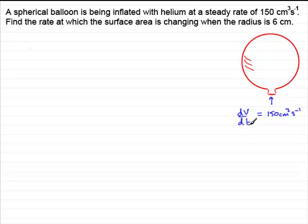Now, what have we got to find? We've got to find the rate at which the surface area is changing. So what we need is the rate of change of area, dA by dt.